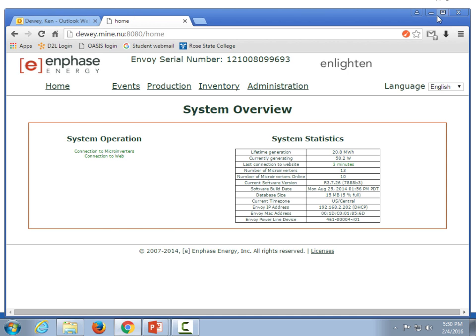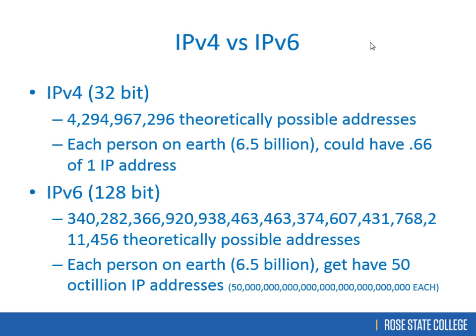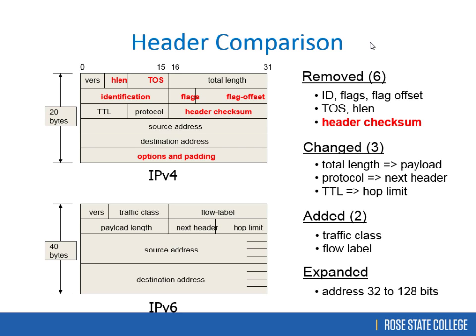Comparing the IPv4 and IPv6 headers, you can immediately see the address space is much larger in IPv6. There's a header checksum in IPv4 — a mathematical calculation to verify correctness, similar to an MD5 hash. But in IPv6, the checksum is removed. The first time I saw that I was surprised.